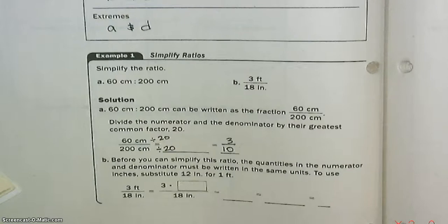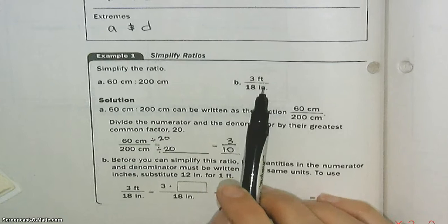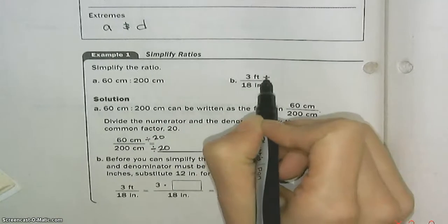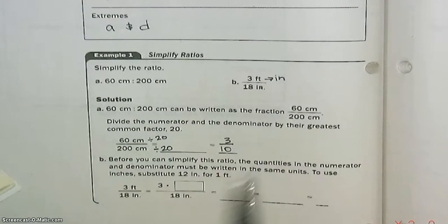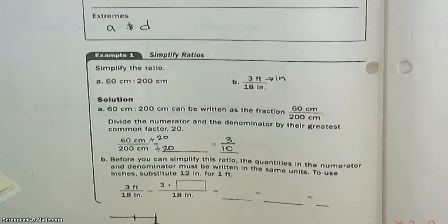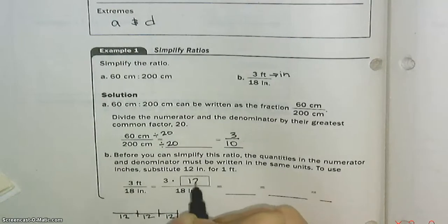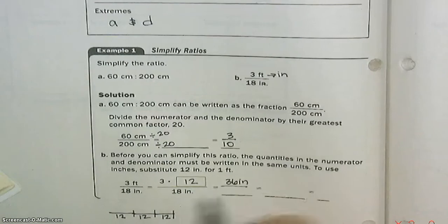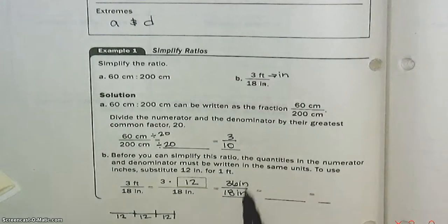Now in letter B, we have 3 feet and 18 inches. The first thing we have to do is get these units to be alike. I think we should turn this into inches. Let's get this top to be in inches. How many inches are in 3 feet? Well, each foot is 12 inches. So here's a foot, here's a foot, here's a foot. So here's 12 inches, 12 inches, and 12 inches. So 3 times 12 gives us 36 inches on the top. And we want to keep the bottom as it is so that our units will cancel.